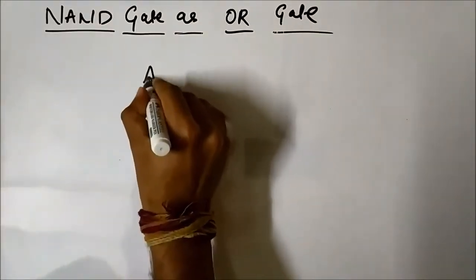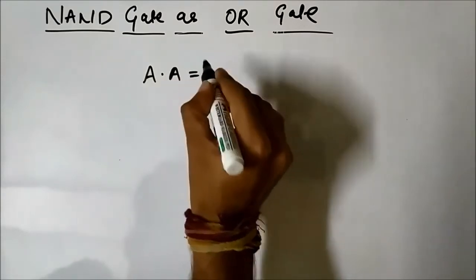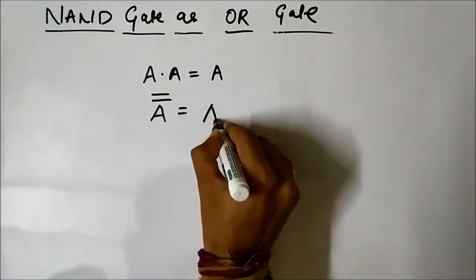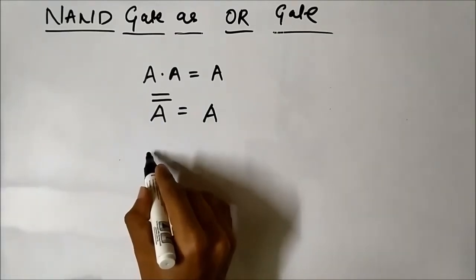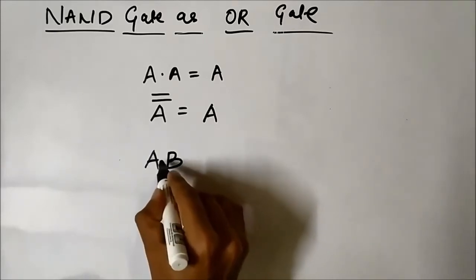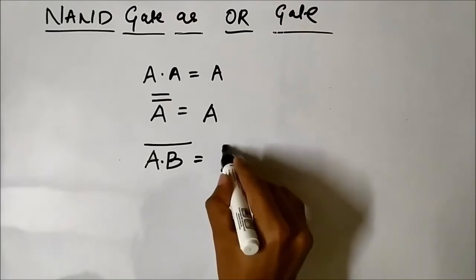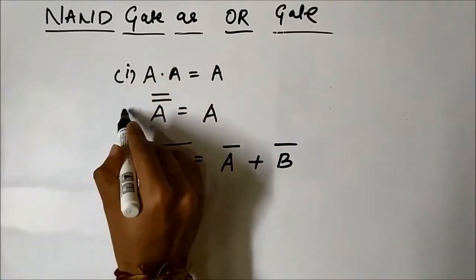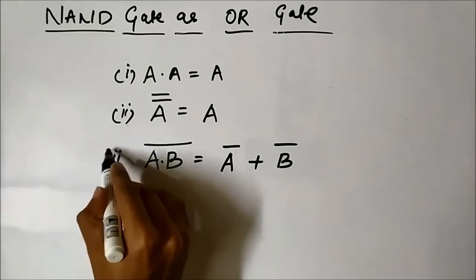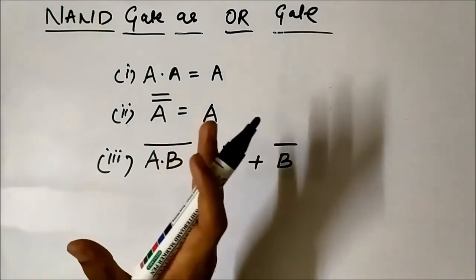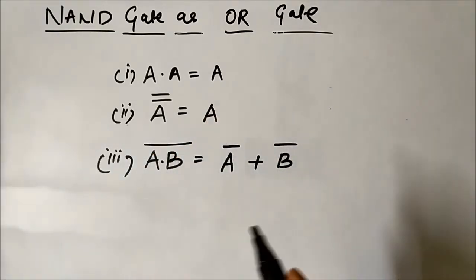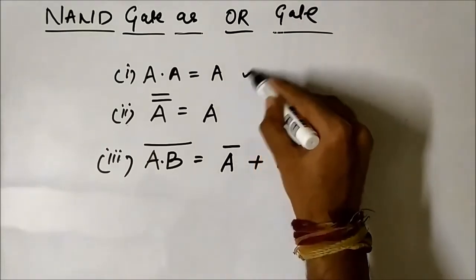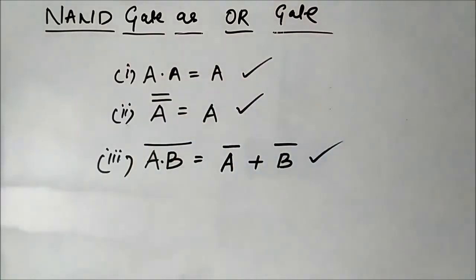The first rule is: any logic level multiplied with itself will give the same result. The second rule is: if we double complement a logic level, we will get the same logic level as output. The third rule is the first De Morgan theorem. These three rules will be used to convert a NAND gate into an OR gate, so please note them down separately and refer to them whenever I perform the conversion operation.